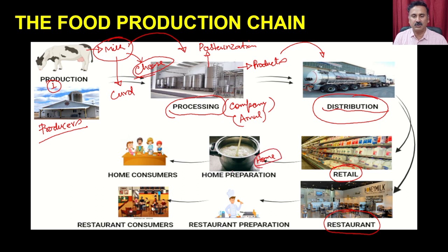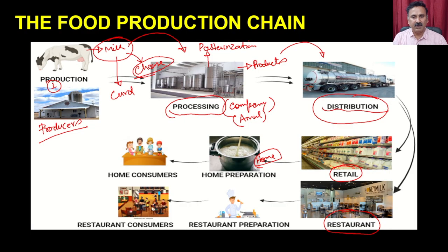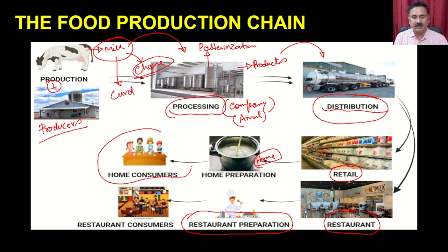From those places, products come to your home and you do home preparations — for example, if you bring milk, you can produce curd at home. From the restaurant, the chef uses these products to make different types of recipes for customers. So in a food chain, it is very protocol-based and well-defined. The final product reaches the consumer only through this systematic and complicated process, which must follow ISI rules throughout.